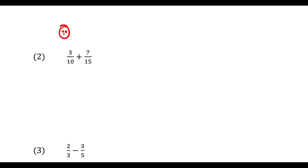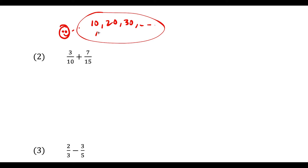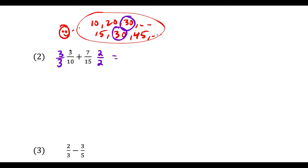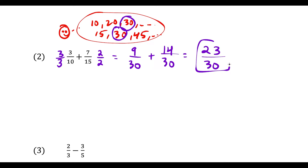Let's continue. Depending on how good your mental math is, that'll determine how simply you do this. Looking at the denominators: multiples of 10 are 10, 20, 30... and multiples of 15 are 15, 30, 45... The first place they match up is at 30. So multiply the first fraction by 3/3 and the second by 2/2. That gives 9/30 plus 14/30. Now add: 9 plus 14 is 23, so we have 23/30.